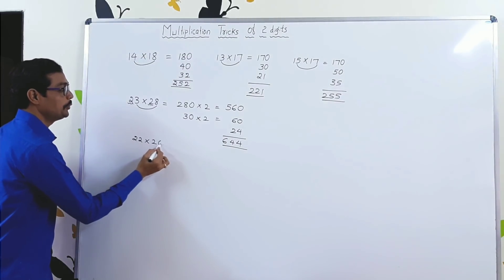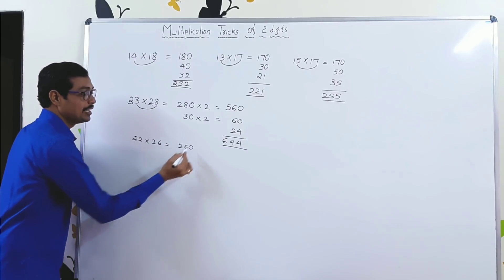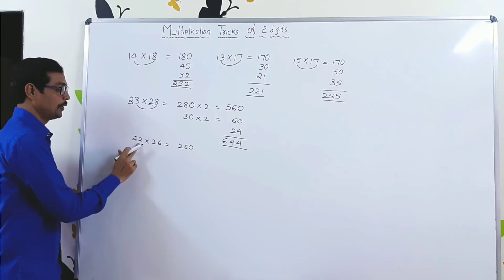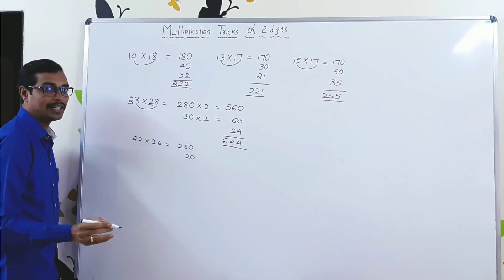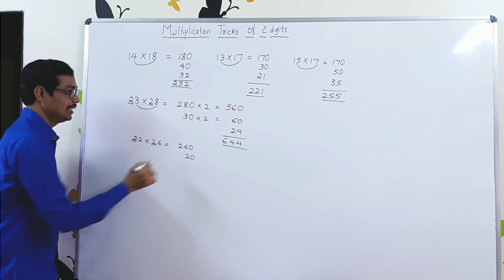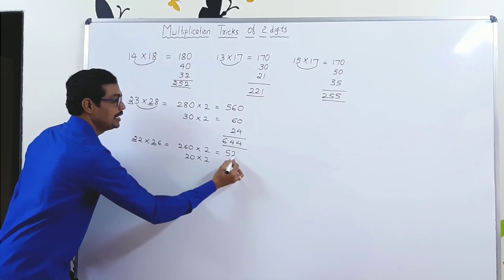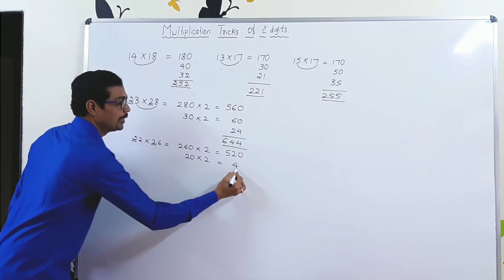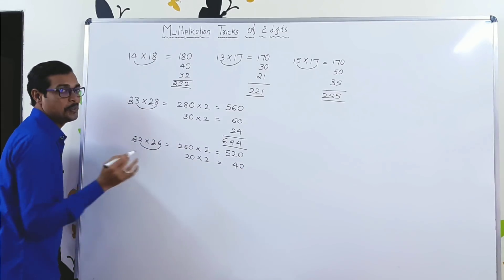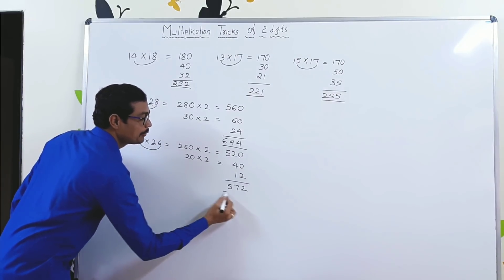We take one more example. 22 × 26. Write it as 260. 2, write it as 20. So in tens place, 2 is there. Just multiply by 2. 520, 40. 2 × 6 is 12. So total, 572.